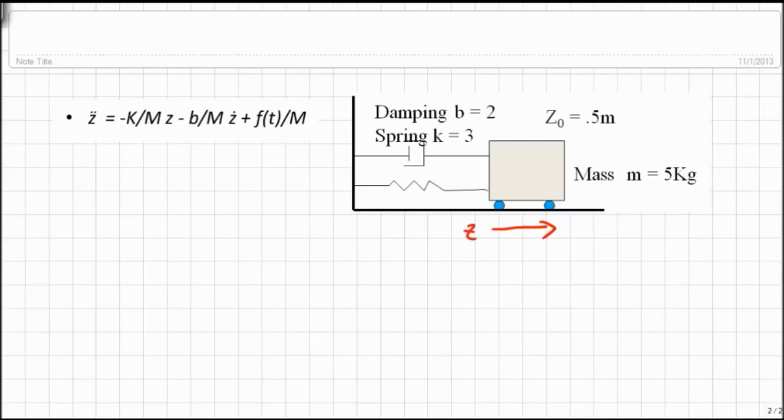Now, here I've done a couple things. I've used Z for the displacement instead of X because we're going to use X for states, and this way I avoid using the same letters and confusion. I've already rearranged my equations of motion, my ordinary differential equation to solve for Z double dots, because that will be very convenient when we go to state space.